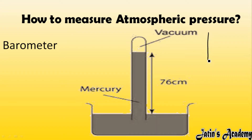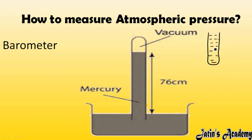First, take a test tube and fill it completely with mercury. When you fill the test tube with mercury, air particles inside will come out, so no air particle remains inside. Then put your thumb on it so that no air particles can move back in, and take it inverted and place it into the trough of mercury.